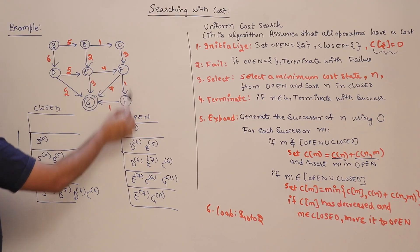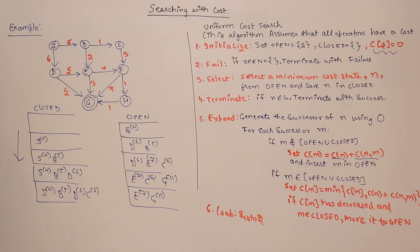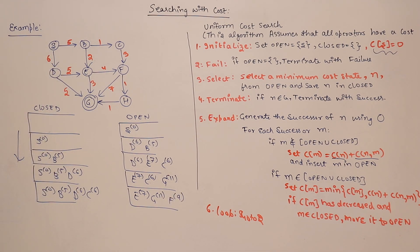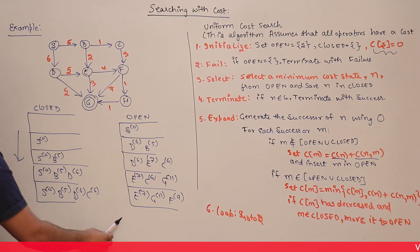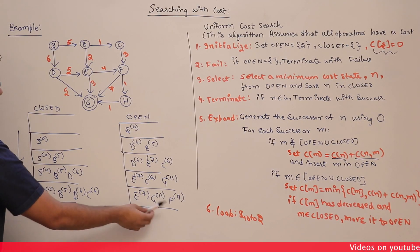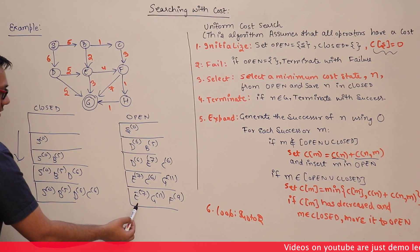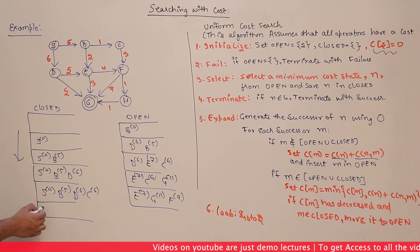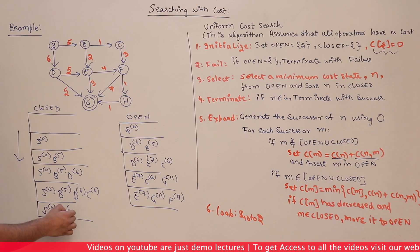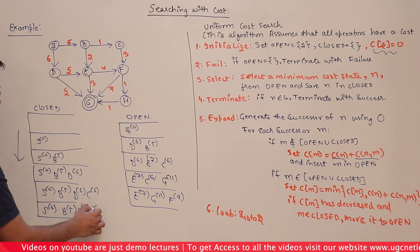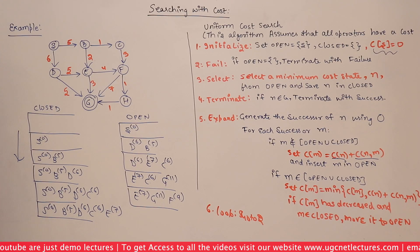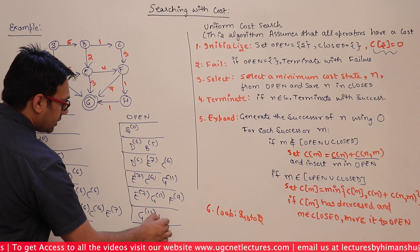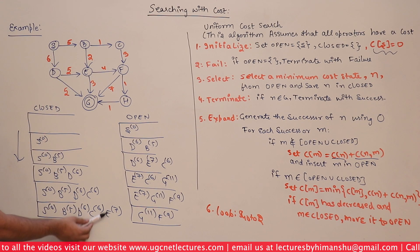Closed now contains S(0), B(5), D(6), C(6). The only successor of C is F. The cost from C to F is 6 + 3 = 9, so we insert F(9) into open. Open now has E(7), G(11), F(9). We go back to step 2 and select the minimum cost state, which is E with cost 7. We put E into closed.